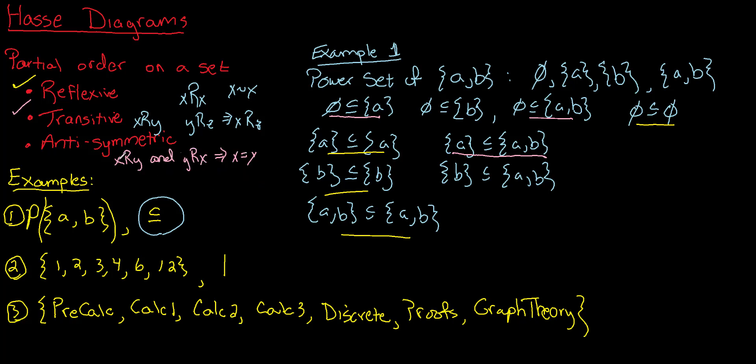Antisymmetric says that if X relates to Y and Y relates to X, then it must be true that X equals Y. For example, {A} is a subset of itself, and {A} is a subset of itself, and {A} equals {A}. It's not very exciting to check, but subset containment is indeed antisymmetric.